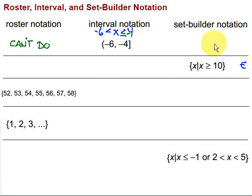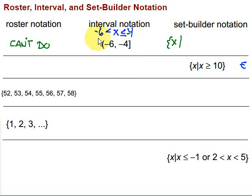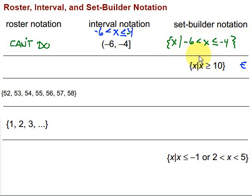Let's go to set builder notation for that. For set builder notation, it's going to start as the set of all numbers x such that — and then I need conditions that give me this chunk of the number line. I've already written the inequality: negative 6 is less than x, which is less than or equal to negative 4. That takes out that chunk of the number line using an inequality. So that's set builder notation.